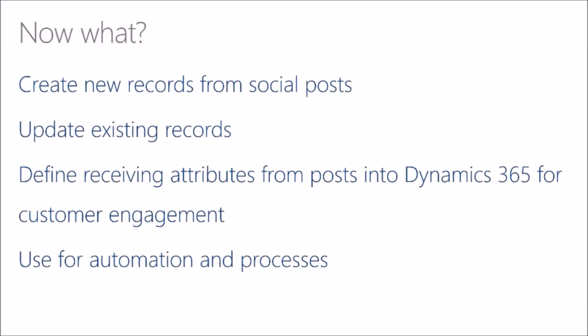Now that you've connected Dynamics 365, you can define entity details in social engagement to specify information for the social activity entity that is created when you link a post to Dynamics 365. When you are satisfied with that configuration of those entities, you can then configure the record creation rules in Dynamics 365 to automatically create new records from the social activity entities. So we can create new records from social posts, update existing records, define the receiving attributes from posts into Dynamics 365 for customer engagement, and then use all of that information for the automation and processes we've discussed.